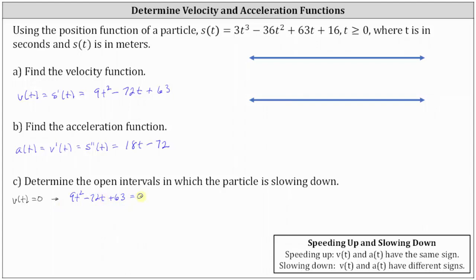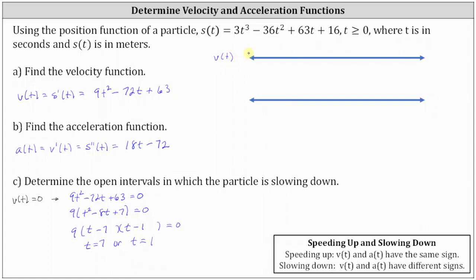Let's solve by factoring. Factoring out the greatest common factor of nine gives us nine times the quantity t squared minus eight t plus seven equals zero. Continuing to factor into two binomials: the factors of positive seven that add to negative eight are negative seven and negative one, giving us t minus seven and t minus one. The product equals zero when t equals seven or t equals one. We plot t equals one and t equals seven on the number line.